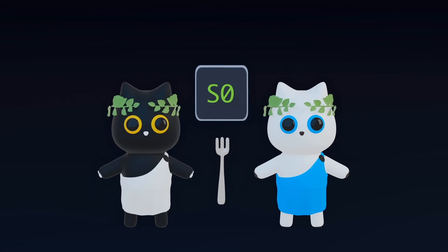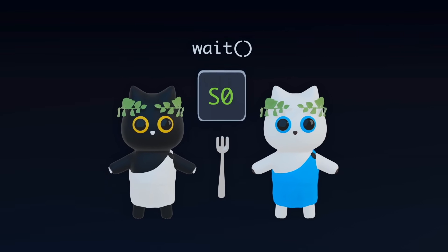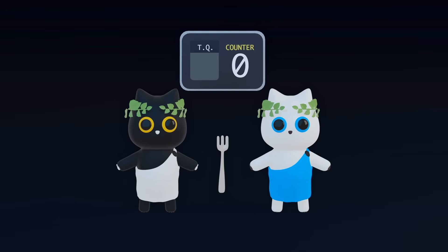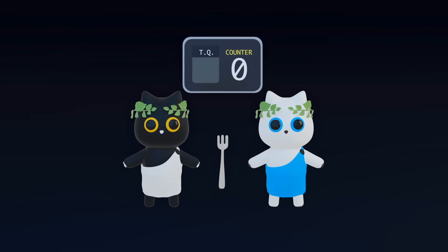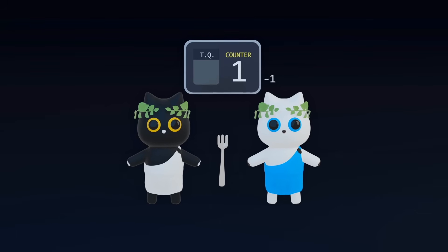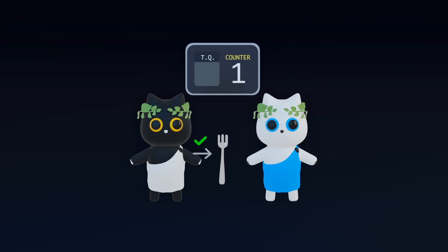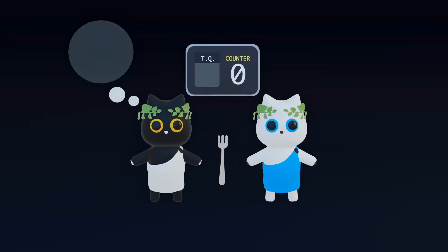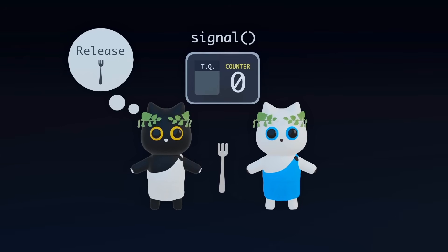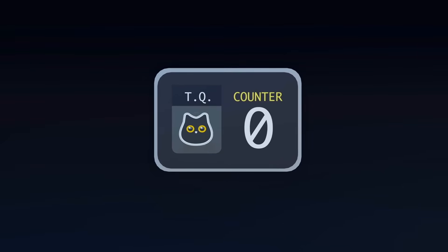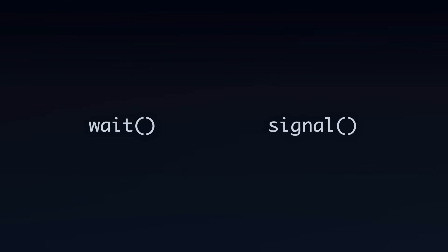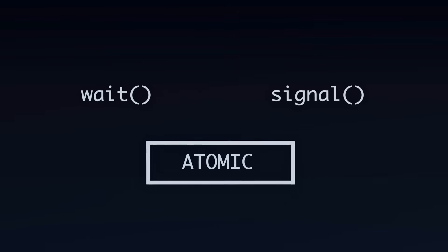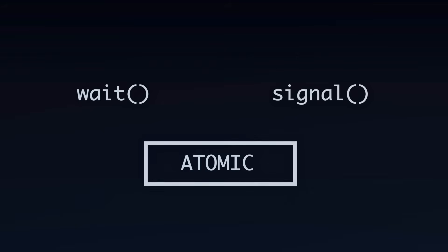When a philosopher wants to obtain a particular fork, they call wait on that fork's semaphore. Wait has two parts: if the semaphore has the value zero, the philosopher is blocked and added to the semaphore's thread queue. If the semaphore has a value greater than zero, we decrement its value by one, and the philosopher is granted access to the requested fork. When a philosopher wishes to give up a fork, they call signal on the fork's semaphore. If there were any blocked philosophers in the semaphore queue, one of them is unblocked and scheduled to act in the future. If no philosophers are in the queue, the semaphore value is incremented by one. Note that these wait and signal operations are atomic in nature, meaning that when the operation is in progress, no philosopher can interrupt it halfway.